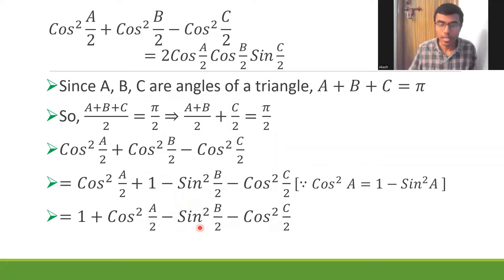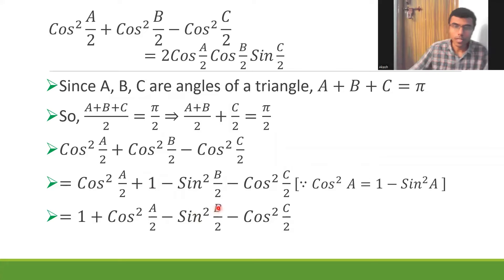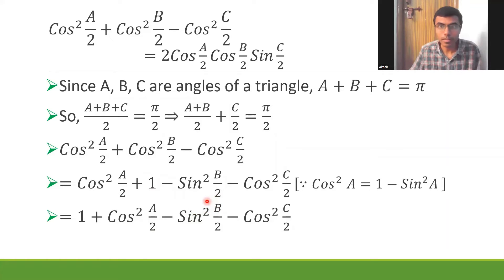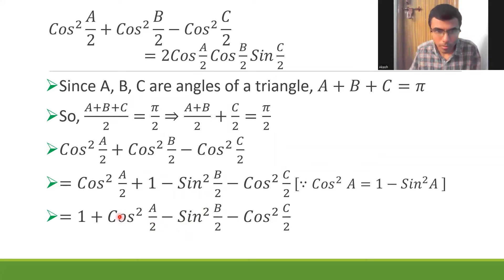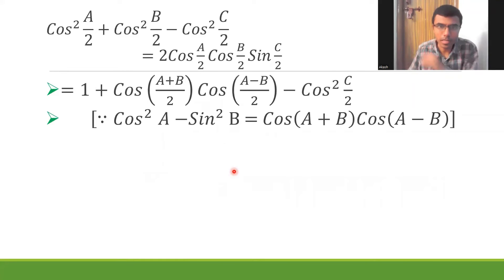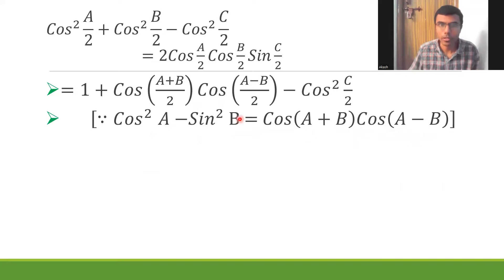Now cos²(a/2) - sin²(b/2) is of the form cos²A - sin²B, which equals cos(A + B)·cos(A - B). Applying this formula, with A = a/2 and B = b/2, I get cos((a/2) + (b/2))·cos((a/2) - (b/2)), which is cos((a+b)/2)·cos((a-b)/2).